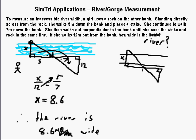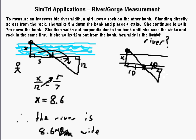If you're actually going to carry this out in real life, don't walk five and then seven — that's ridiculous. Go ten and then ten. If both segments are ten, you have congruent triangles, and then whatever distance you have to walk out from the bank to see through your stake and the object on the other side is exactly equal to X. Make it congruent — it's way easier, you don't have to do difficult math.